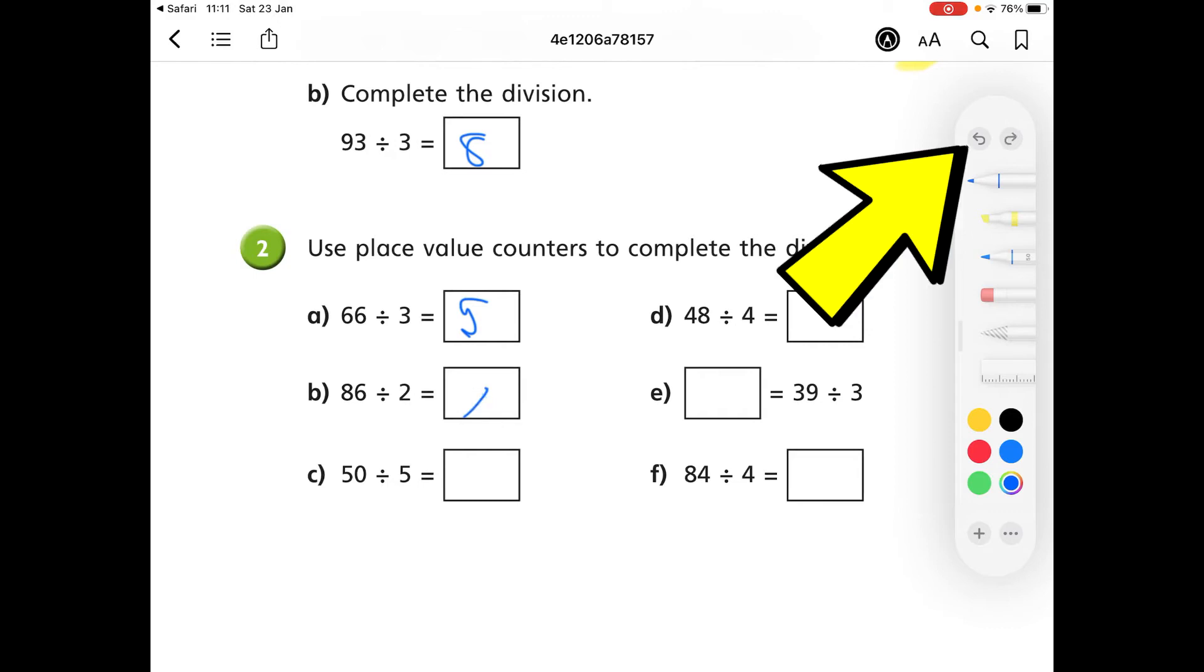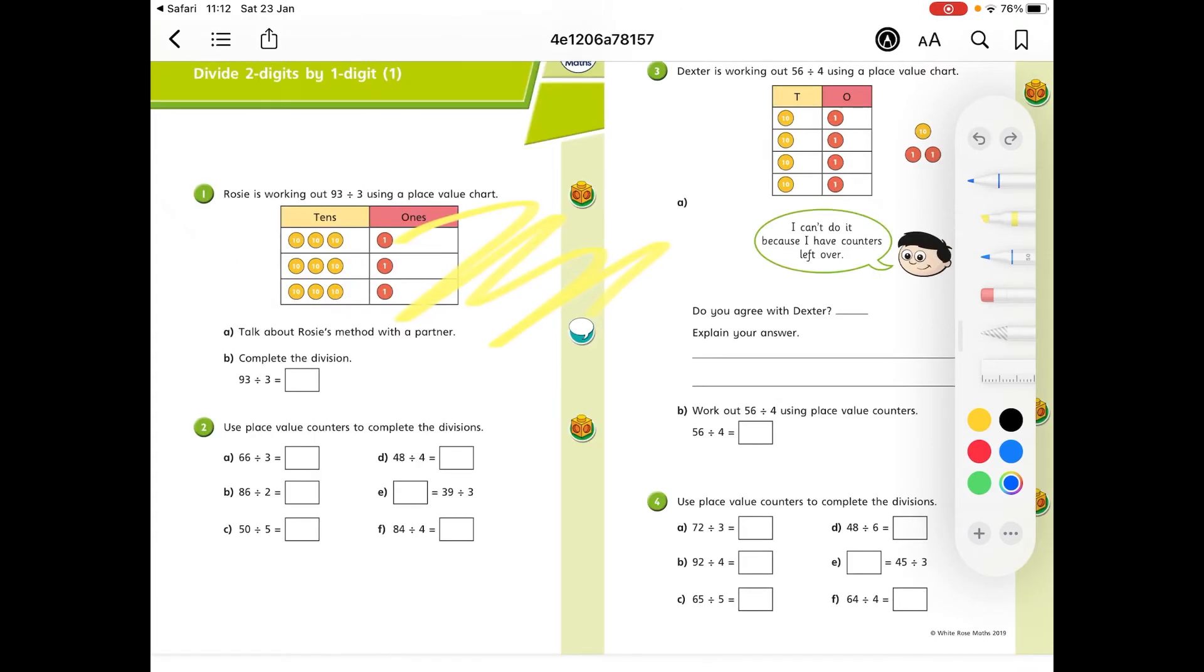There's an undo so you can remove anything that you've drawn and you can change your colors. It's not too difficult, you just need to know where to go.